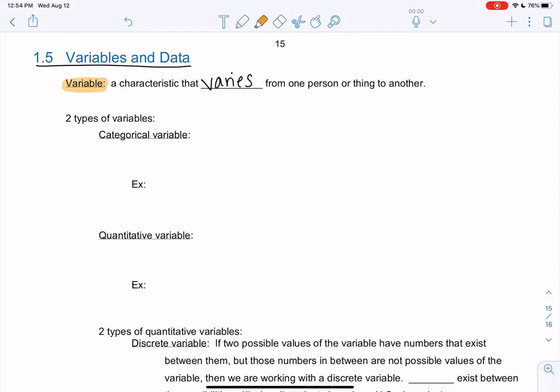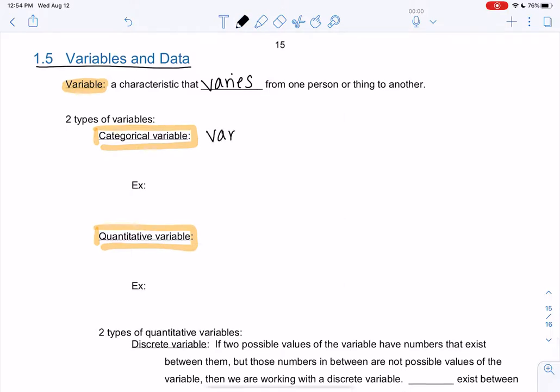So there's two types of variables. We have categorical and we have quantitative. A categorical variable is just any variable in words and it has no numerical meaning or no numerical value.